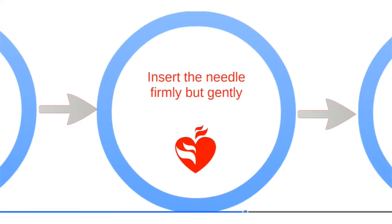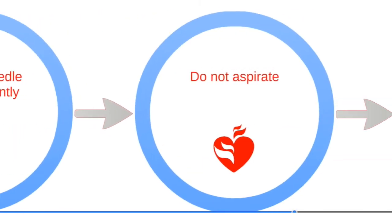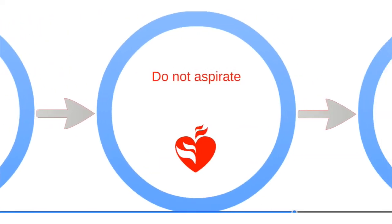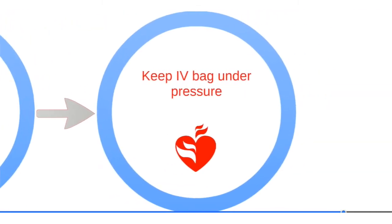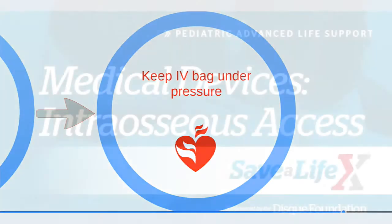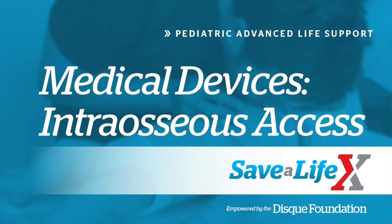Insert the needle firmly but gently. Resistance will suddenly drop when in the marrow. Do not aspirate. Rapidly infuse 5 milliliters of fluid. Lastly, keep the IV bag under pressure and stabilize and secure the needle.